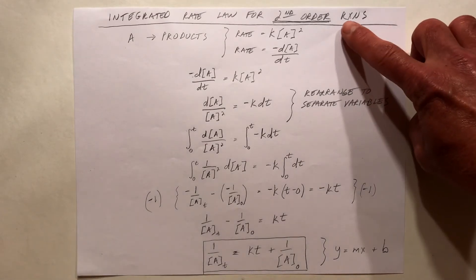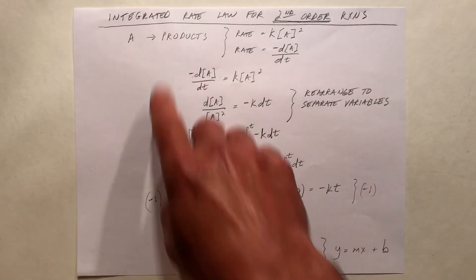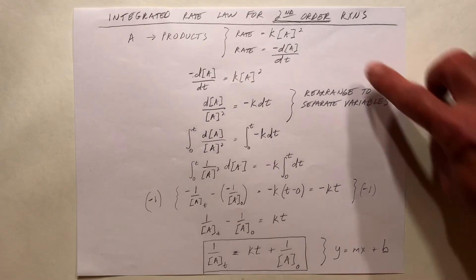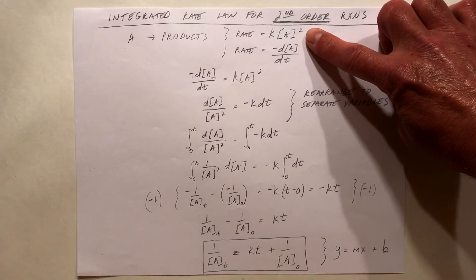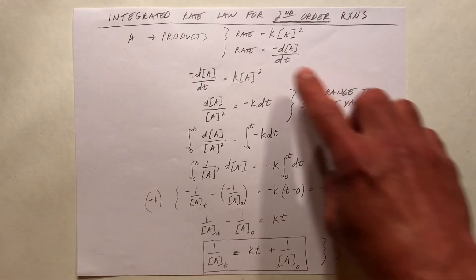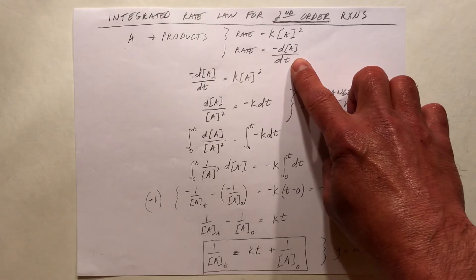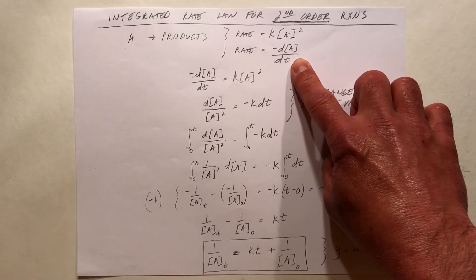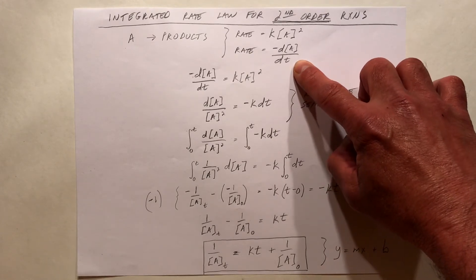This is for a second-order reaction where we have a single reactant A forming products. The differential rate law says the rate of the reaction is equal to K, the rate constant, times the concentration of A squared. The rate of the reaction is always equal to the negative of the slope of a concentration versus time graph, or the negative of the derivative of concentration over time.